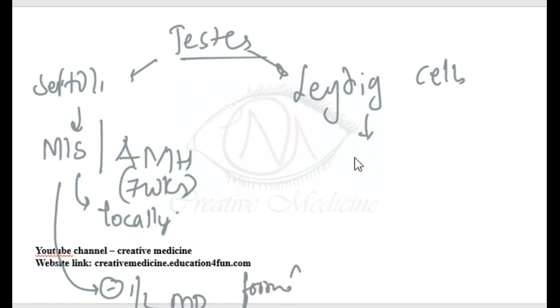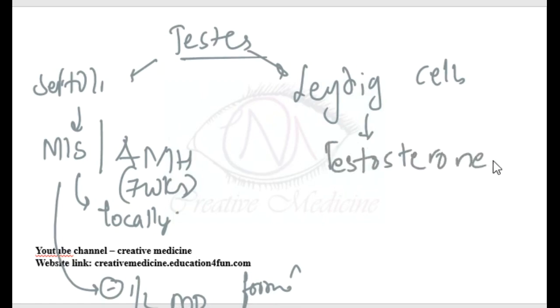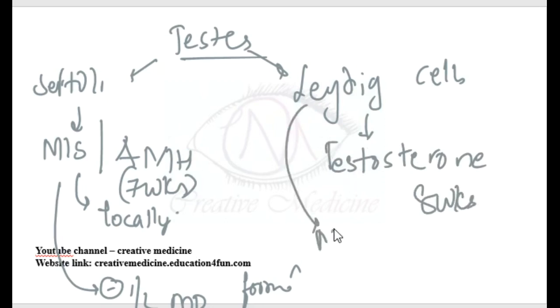Leydig cells will secrete testosterone. Secretion of testosterone by the Leydig cells begins at eight weeks, and the secretion reaches its maximum at 15 to 18 weeks.